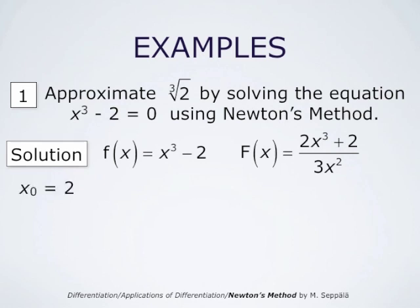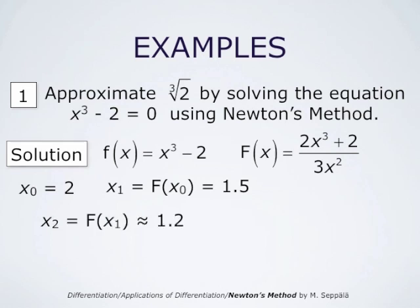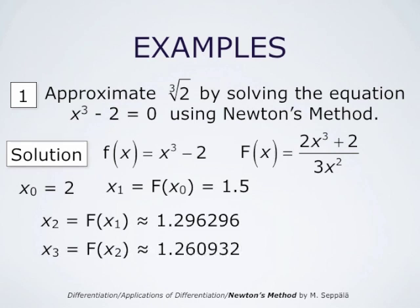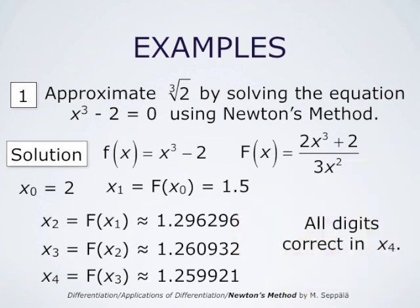We take x0 = 2 as our initial approximation for the cube root of 2 — not a very good one. After computing x1 = 1.5, x2 ≈ 1.296296, x3 ≈ 1.260932, and x4 ≈ 1.259921, one can verify with a computer that in x4, all digits shown are already correct. So this method works very well in this case.